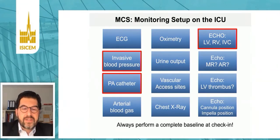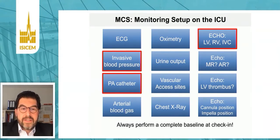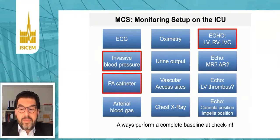From those directly measured values, you can calculate several different parameters — for example, the pulmonary arterial pulsatility index, cardiac power output, and pulmonary and systemic vascular resistance, maybe also indexed. Those are very important values for monitoring and guiding therapy in your patient.